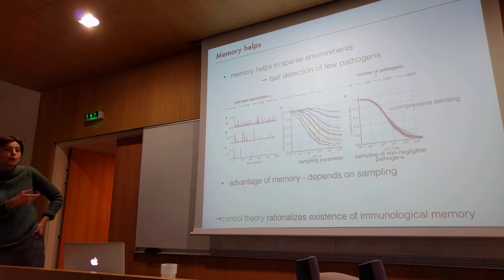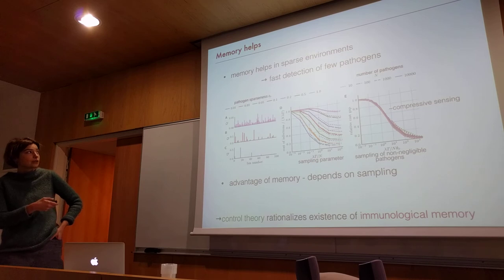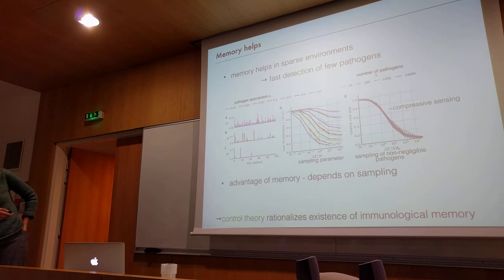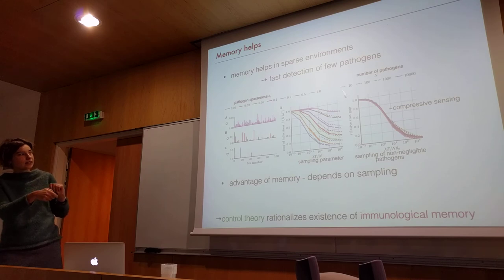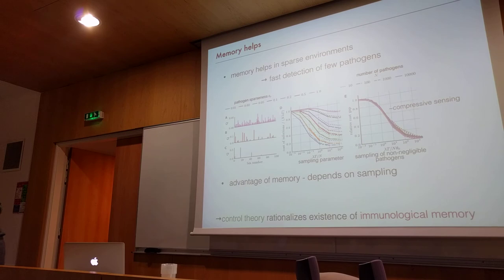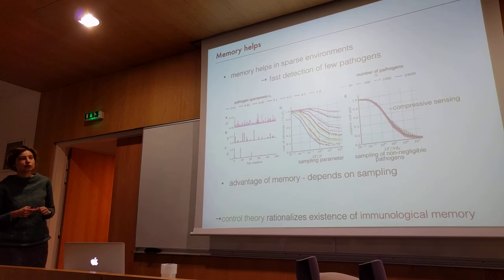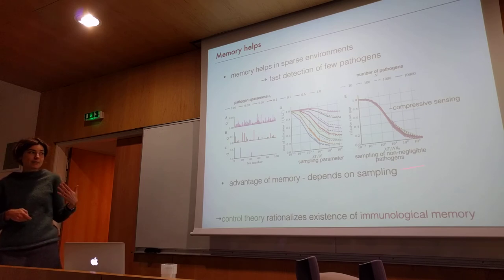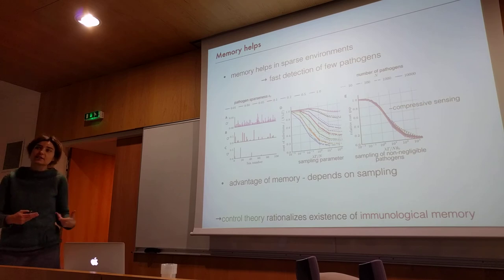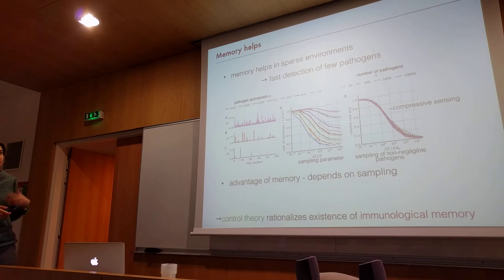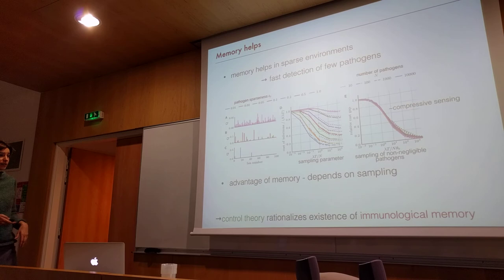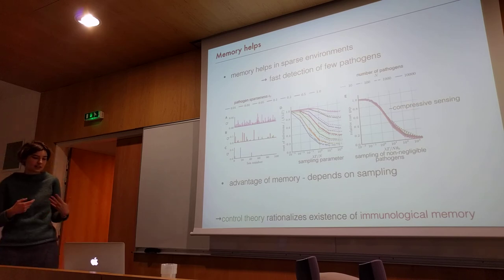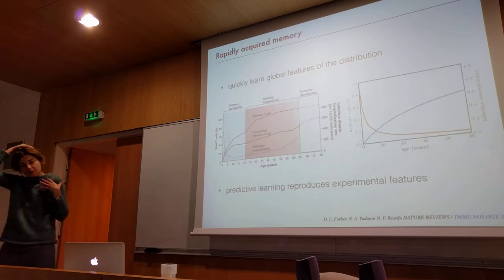Memory is useful because you can detect pathogens quickly. Interestingly, if you rescale all these curves by the sparseness parameter, they all collapse onto one. This shows that really only two things matter in this problem: sampling and sparseness. This is related to ideas in neuroscience about compressive sensing — very efficient algorithms for learning a random environment — and the immune system seems to work in a very similar way. Ultimately, this rationalizes why memory is useful.